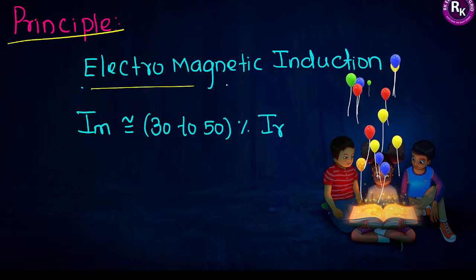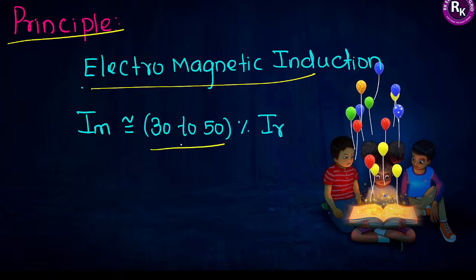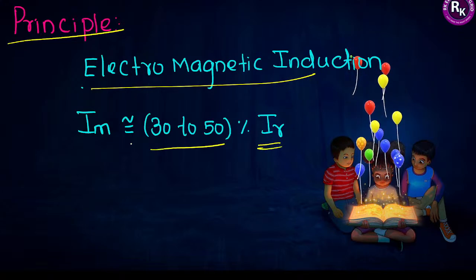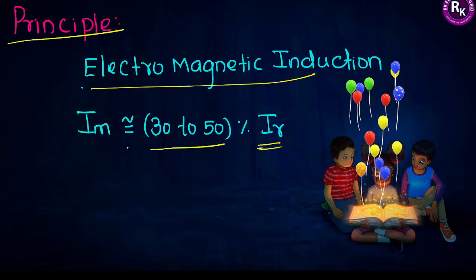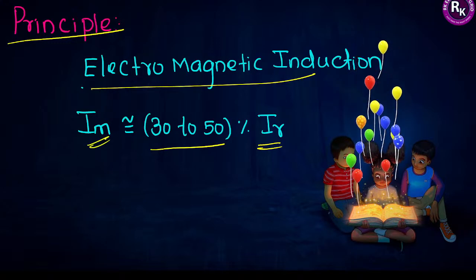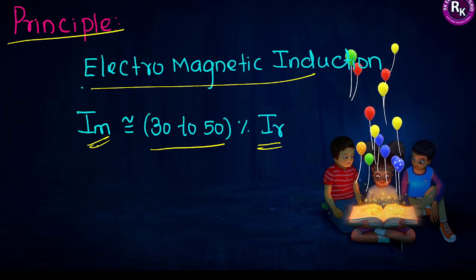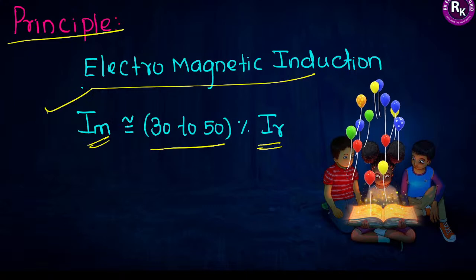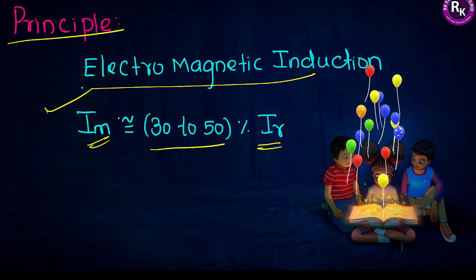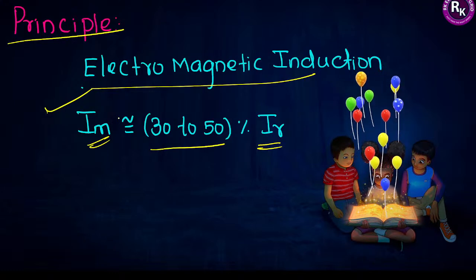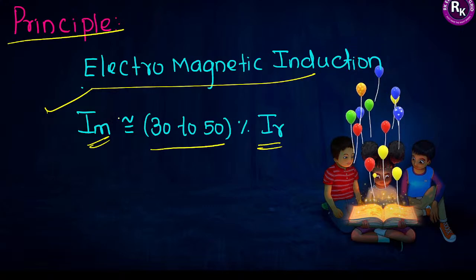The induction machine is also called a variable-frequency machine and a singly excited machine — like a transformer, it is excited by a single supply only. In contrast, synchronous machines and DC machines have two separate excitations: armature winding and field winding. Both transformer (static device) and induction machine (dynamic device) are excited with a single supply.